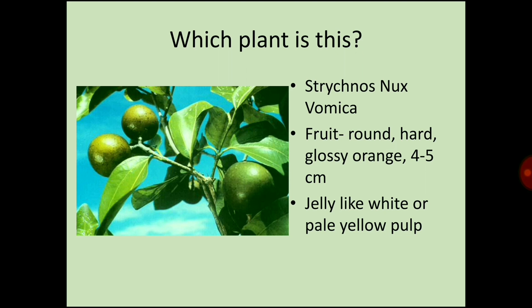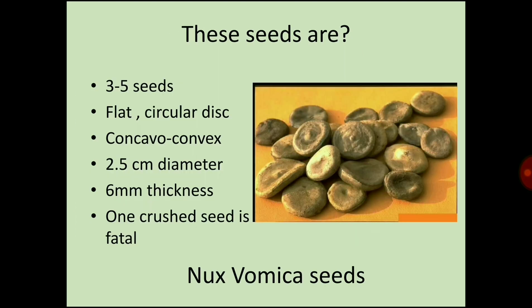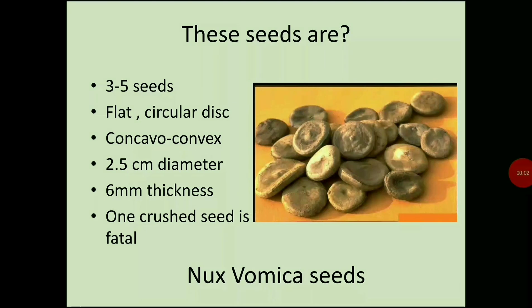The answer is Strychnos nux vomica. This fruit is round, hard, and glossy orange, around 4 to 5 centimeters, and has jelly-like white or pale yellow pulp.